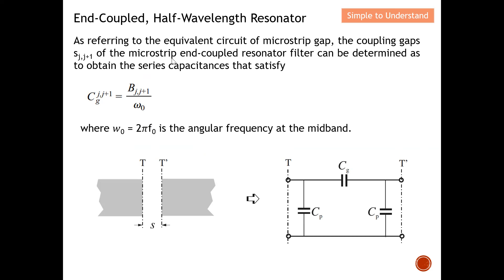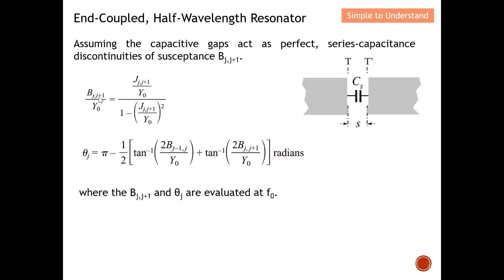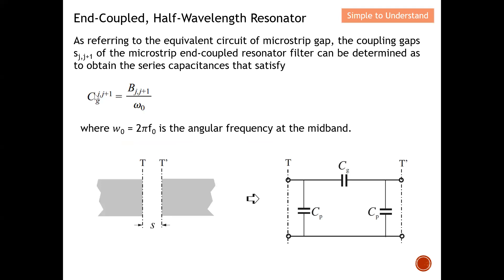Referring to the equivalent circuit of the microstrip line gap, the coupling gap of the microstrip-coupled resonator can be determined to obtain the specified series capacitor. This is the series capacitor and this is the shunt capacitor. The series capacitor C_g can be calculated from this formula — dividing by Z0 of 50 ohms gives Y-naught equals 1 over 50 ohms. The series capacitor is found from this equation, where omega-naught equals 2-pi-f-naught, and f-naught is the center frequency of the bandpass filter.